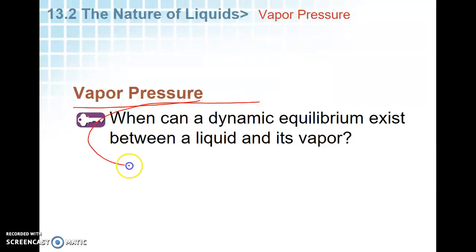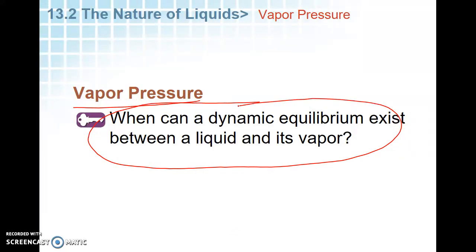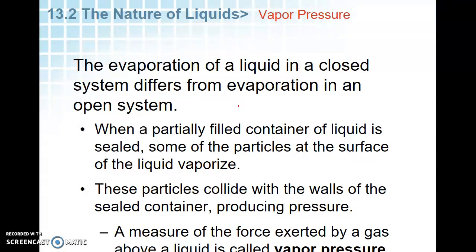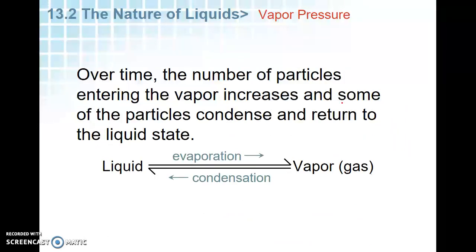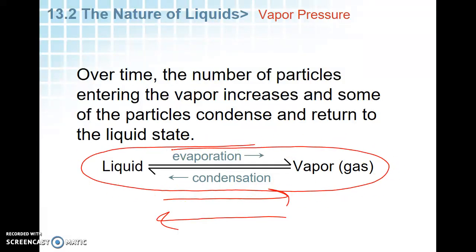When can a dynamic equilibrium exist? The evaporation of a liquid in a closed system differs from an open system. When a liquid is sealed, particles vaporize — they gain enough kinetic energy to become a gas — but when they hit the sides of the container they lose energy and can condense back. In the process of colliding they create pressure. The measure of the force that this gas exerts on the container is called vapor pressure. That's the pressure of the gas above a liquid.